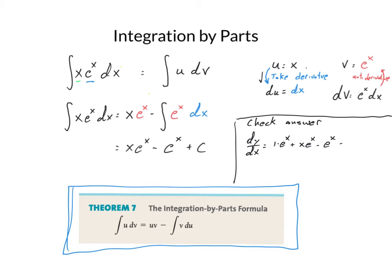And the derivative of c is 0. So this simplifies to, in this case, this e to the x and this negative e to the x cancel. So I'm left with x e to the x, which is what I started with. So good check.